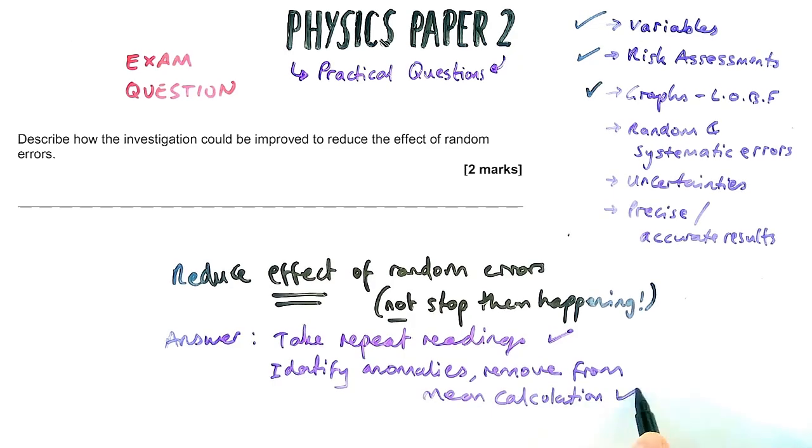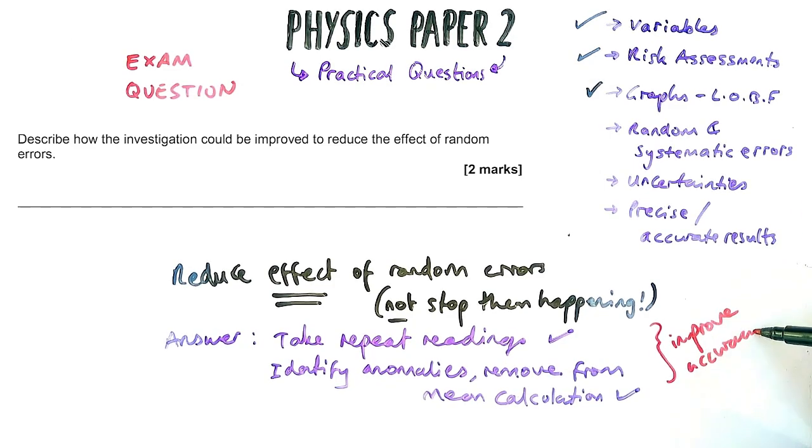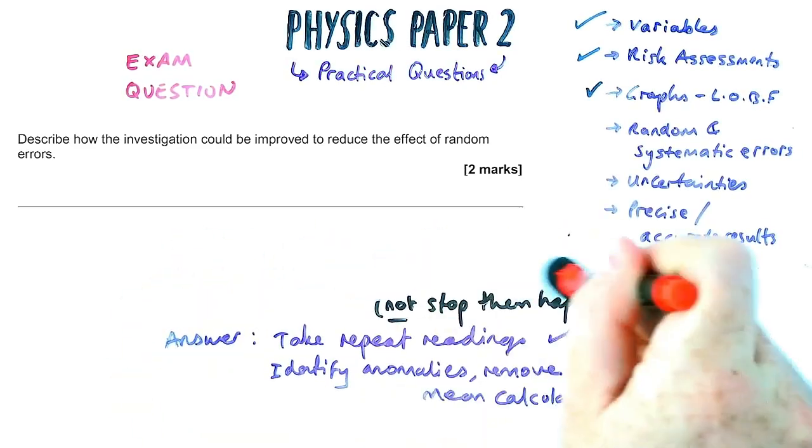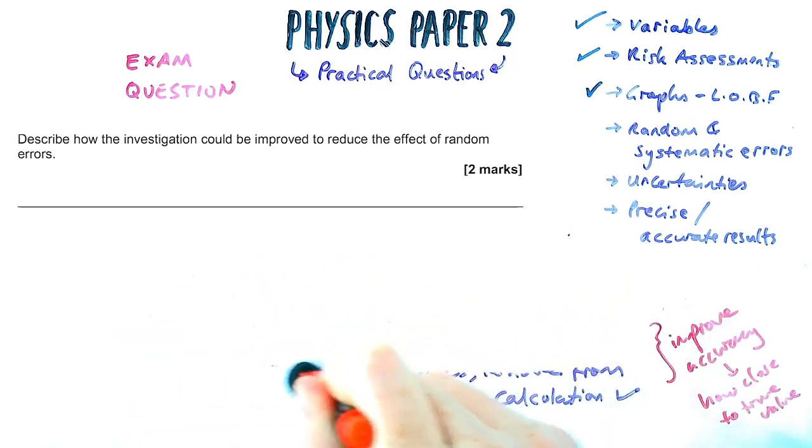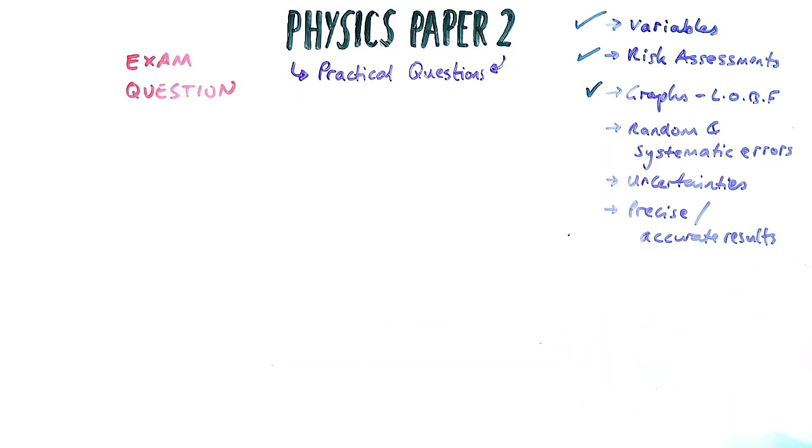Now, almost always in questions like this, there won't be any repeats. So the answer, you take repeats, identify anomalies, remove from the means. And what that does as a follow-up, sometimes they ask you, why is that a good thing? It improves accuracy of your results, and accuracy is how close to the true value you can get. So that's how we work out how to improve accuracy, and also to reduce the effect of random errors.